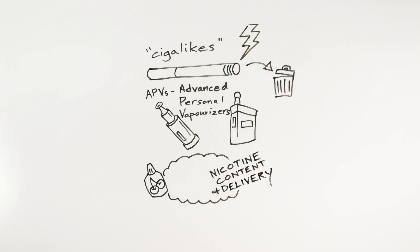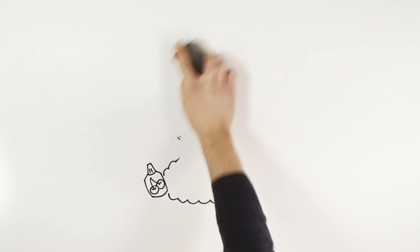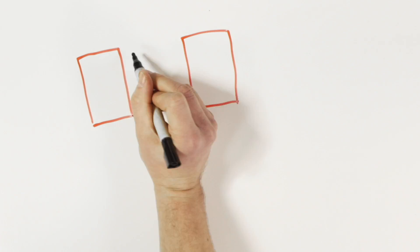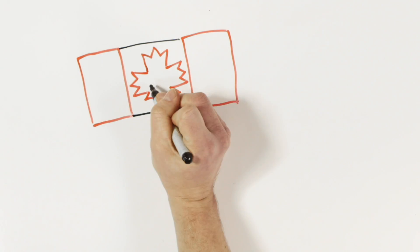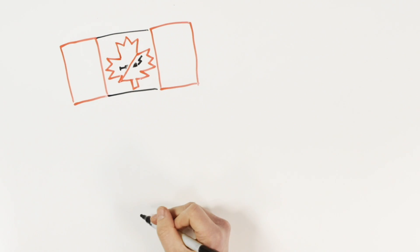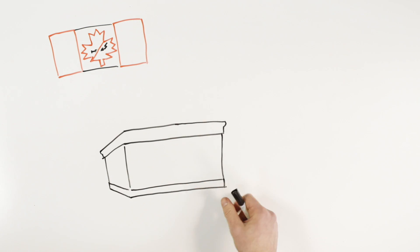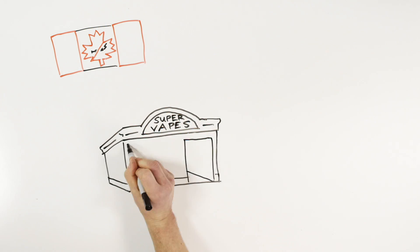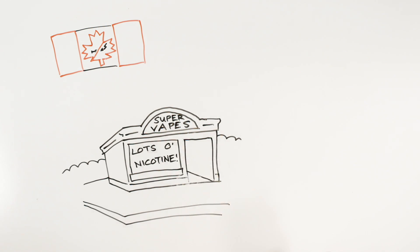In Canada, it is not legal to sell nicotine e-cigarettes or nicotine for use in e-cigarettes. Nevertheless, nicotine e-cigarettes are sold openly in vape shops, and it is estimated that more than half of e-cigarettes used in Canada contain nicotine, the substance that makes cigarettes and other tobacco products addictive.